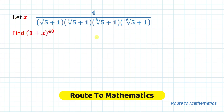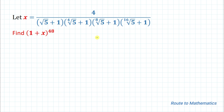Hello everyone, welcome to Root 2 Mathematics. In this video we are going to solve an interesting problem involving radicals. The given question is: let x equal 4 divided by (root 5 + 1)(4th root of 5 + 1)(8th root of 5 + 1)(16th root of 5 + 1). Then find the value of (1 + x) to the power 48.